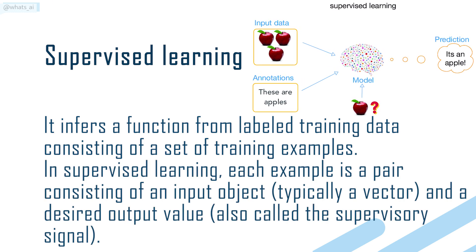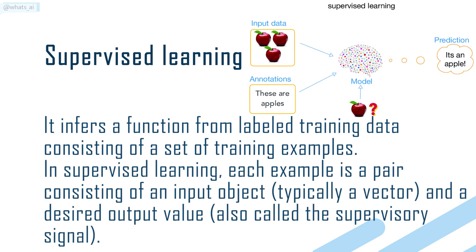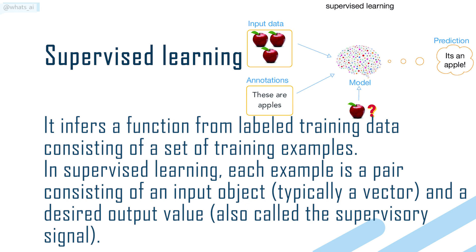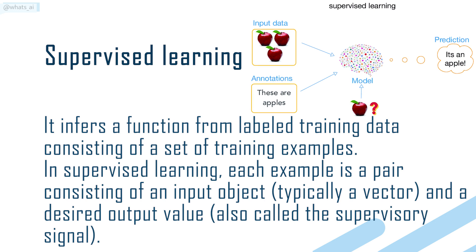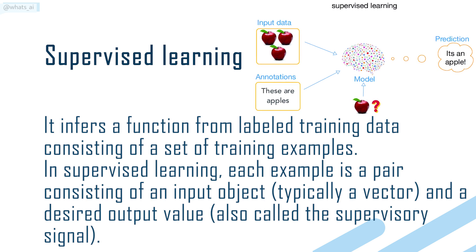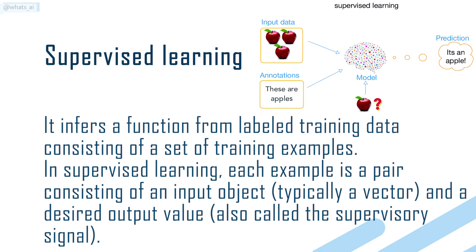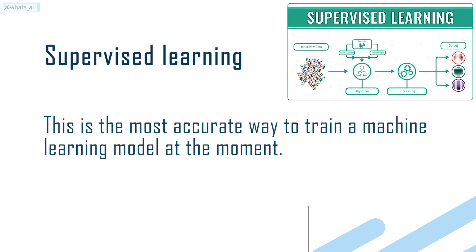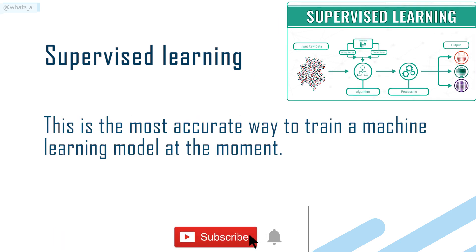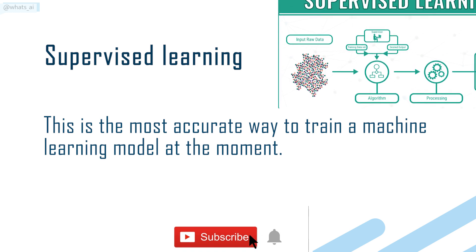In supervised learning, each example is a pair consisting of an input object, typically a vector, and a desired output value, also called the supervisory signal. This is the most accurate way to train a machine learning model at the moment.